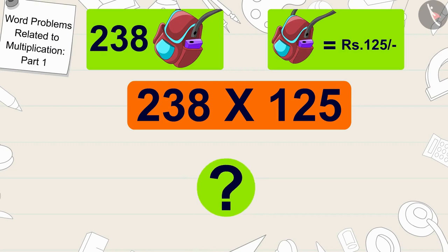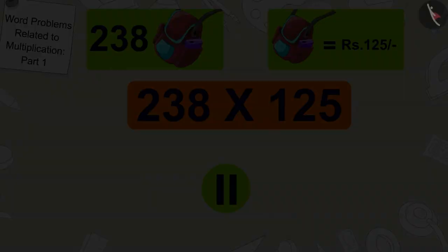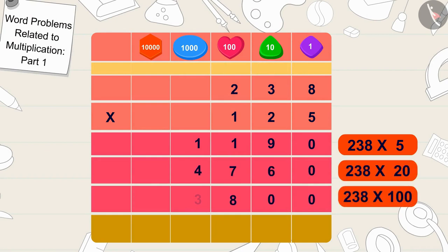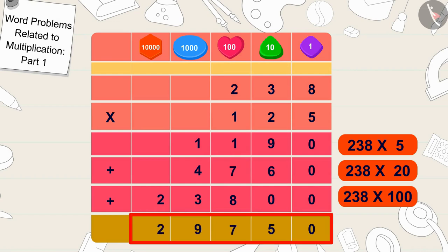Children, can you find the answer to this multiplication? If you want, you can stop the video and find the answer. In this way we can find the answer: 238 times 125 is 29,750.